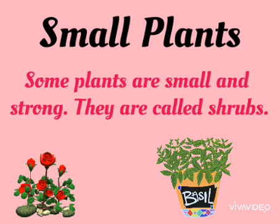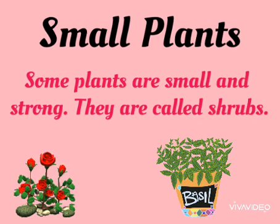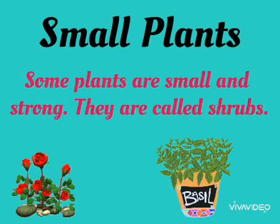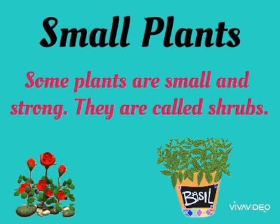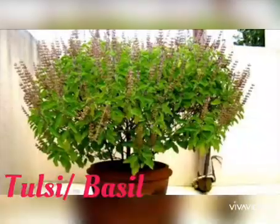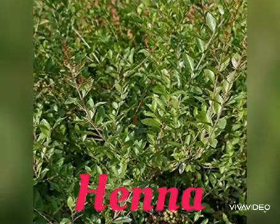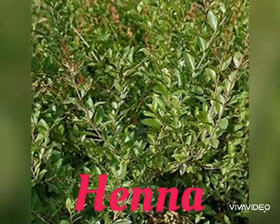Now, small plants. Some plants are small and strong. They are called shrubs. Batcho, joo plants chote aur thode strong hotte hain, unko hum bolte hain shrubs. For example, tulsi, rose, heena, etc.